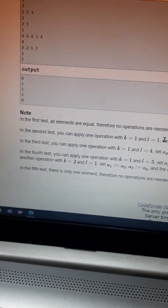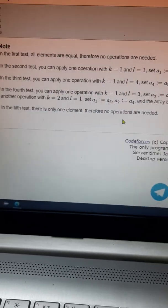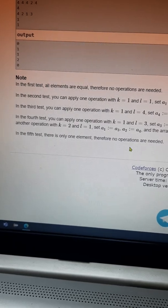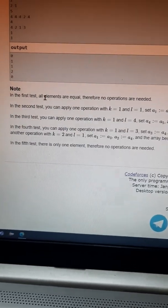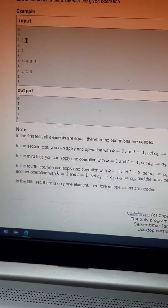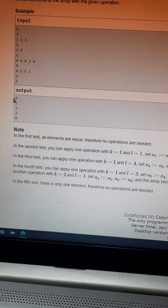These are the sample input and output. The first test case: all elements are equal, therefore no operations needed. The first test case all the elements are [1, 1, 1], so the number of operations needed is 0.